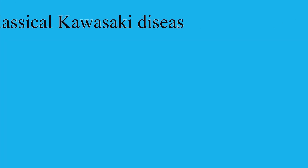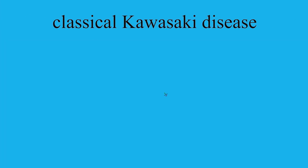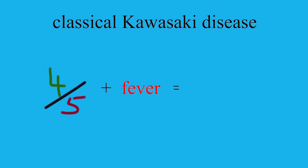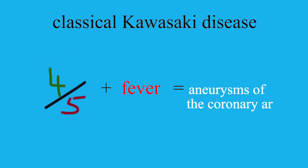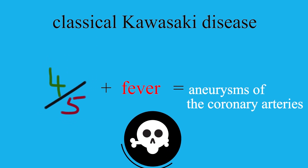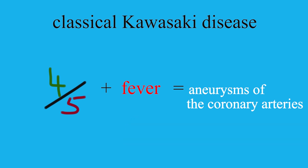For classical Kawasaki disease, individuals must meet at least four of these five criteria, along with fever. Patients who meet these criteria are likely to develop aneurysms of the coronary arteries.